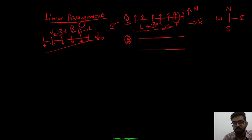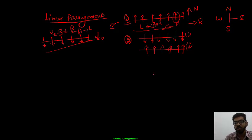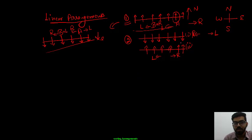Let us move to type number two, where two rows are given. Row number one and row number two. If row number one is facing towards the South direction, those persons face like this. Row number two persons are facing towards the North direction. So their arrows point like this. According to row one persons, right hand side is this side and left hand side is this side. According to row two persons, right is here and left is here.